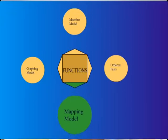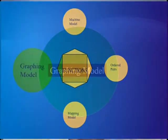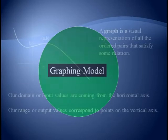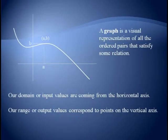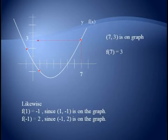Our final function model, the graphing model, is the one that people are most familiar with, but it's also usually the hardest to understand. A graph is a pictorial way of representing a set of ordered pairs. Our input value will correspond to a location on the horizontal or x-axis, and our output value will correspond to a location on the vertical or the y-axis. For instance, if (7, 3) is a point on our graph, this means that f(7) = 3, or an input value of 7 maps to an output value of 3.